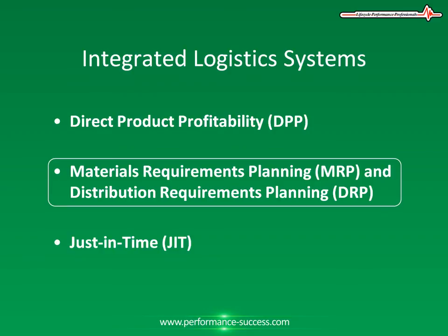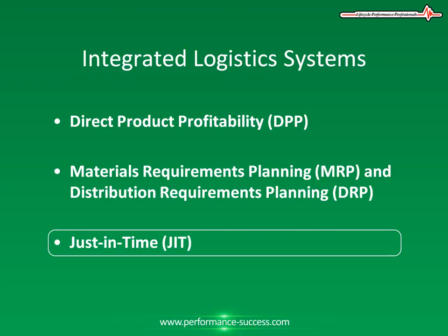Just-in-time, or JIT. JIT originated as a new approach to manufacturing and has been successfully applied in many industries such as the automotive industry. It has significant implications for distribution and logistics. The overall concept of JIT is to provide a production system that eliminates all activities that neither add value to the final product nor allow for the continuous flow of material — in simple terms, that eliminates the costly and wasteful elements within a production process.